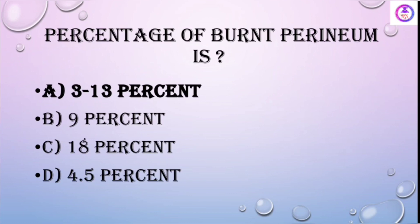Regarding percentage of burns: a burnt perineum is 1% on its own, but perineum including the gluteal region — after seeing the options — the answer will be 3 to 13%.